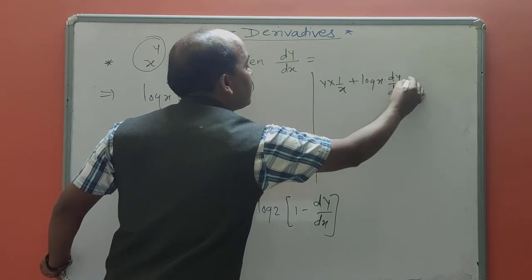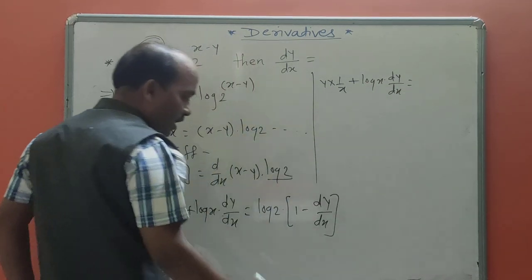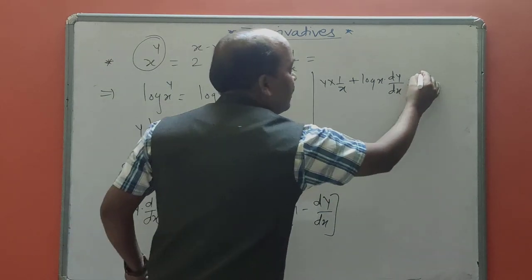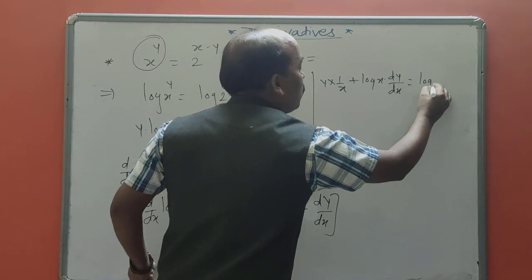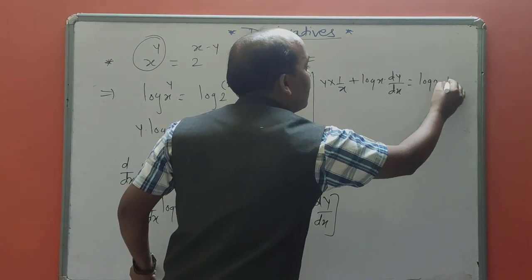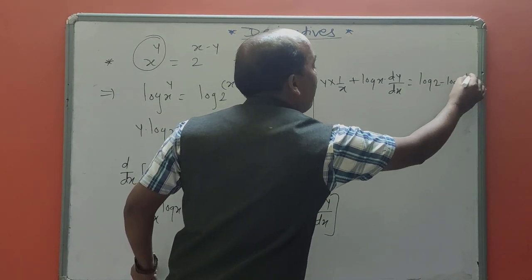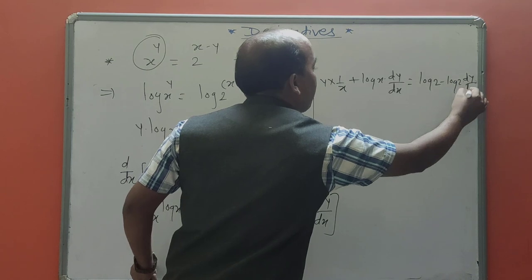LHS simplification: y times the derivative of log x is 1/x, plus log x times dy/dx. On the RHS, multiplying log 2 inside gives log 2 minus log 2 times dy/dx.